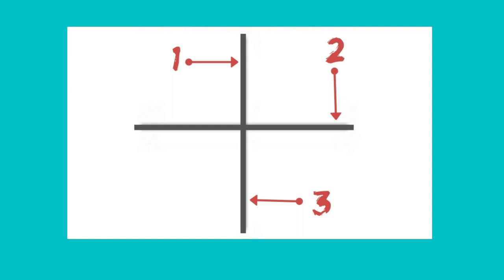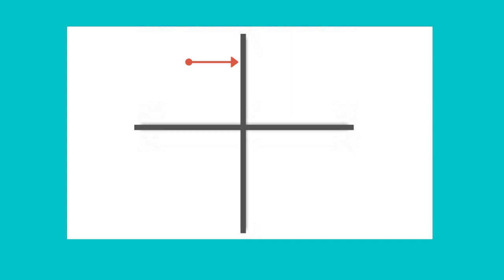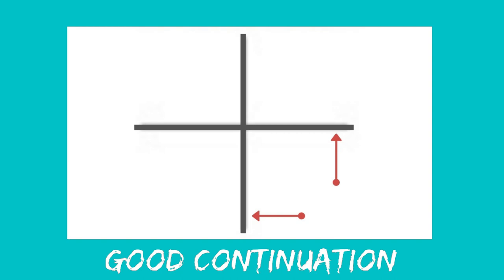Let's look at another one. If I say there are four lines and you can group two lines together, many of you will say you can group this and this together, or this and this together. But you could also group them in other combinations — that would make a perfectly reasonable interpretation, but we don't see it that way. Our visual system likes things to continue, which is something we call good continuation. This gestalt law is called continuity.